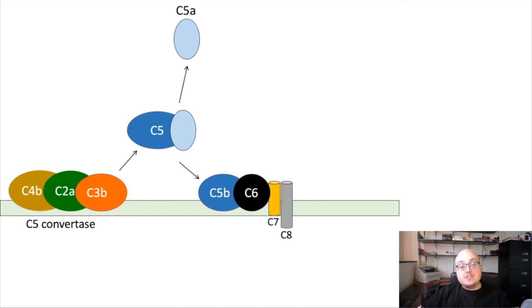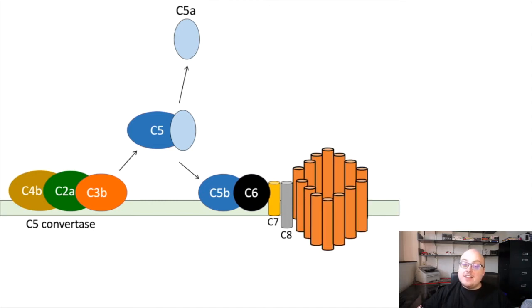C7 recruits C8, which anchors this complex to the plasma membrane of the target cell. And then C8 is going to recruit a molecule called C9. And not just one molecule of C9, but actually many. And they actually form this oligomeric pore structure, which makes up the membrane attack complex. So all of these molecules, C5B, C6, C7, C8, and C9, form the membrane attack complex, or MAC, M-A-C.